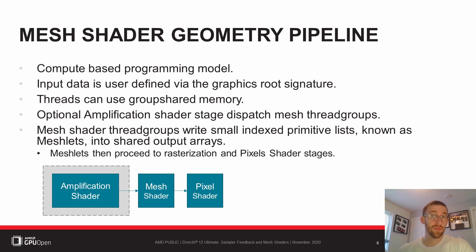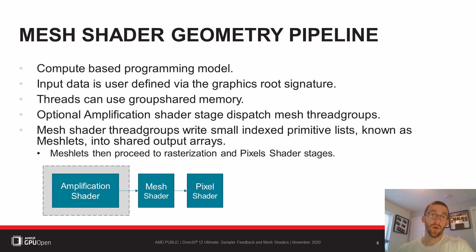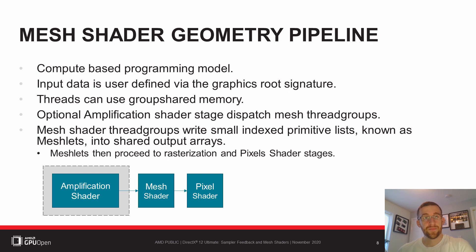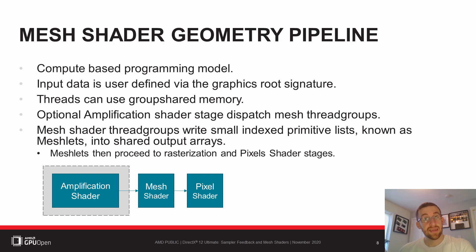Mesh Shaders, along with the optional amplification stage prior to it, introduce a compute-style API to meet the needs of developers, whilst allowing parallel hardware to be more effectively used. The only input is via the user-defined graphics root signature, with threads interacting using group shared memory. Mesh Shaders output small, indexed primitive lists. With the API based around compute, Mesh Shader thread groups work together in order to write elements within output arrays. These output arrays contain indexed lists which feed primitive assembly and the rasterizer hardware, and are known as Meshlets.